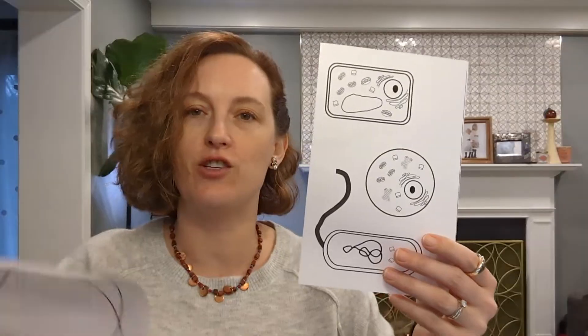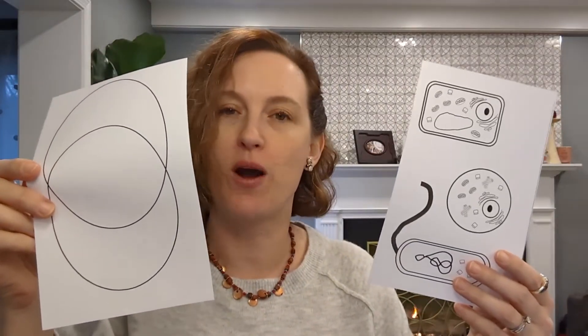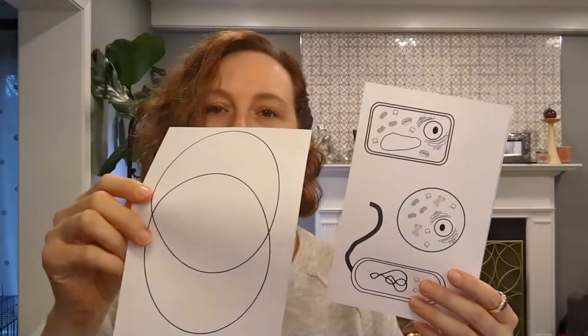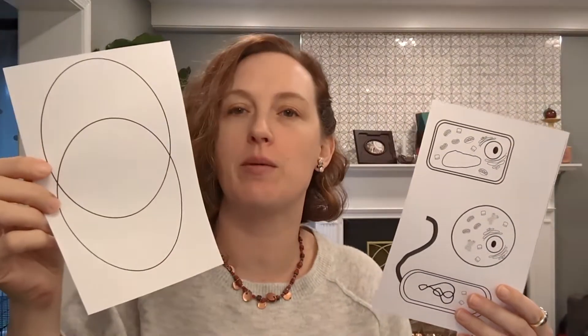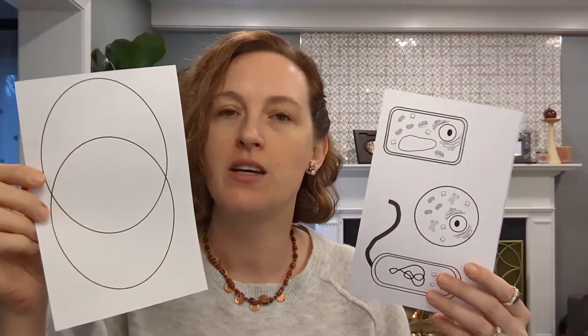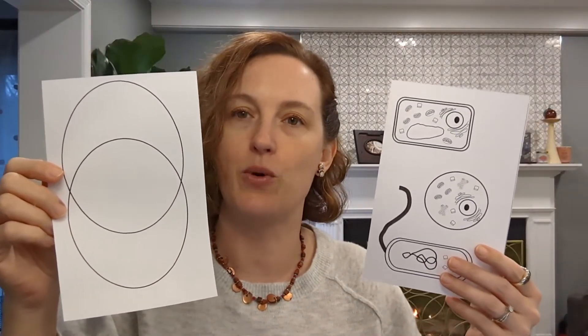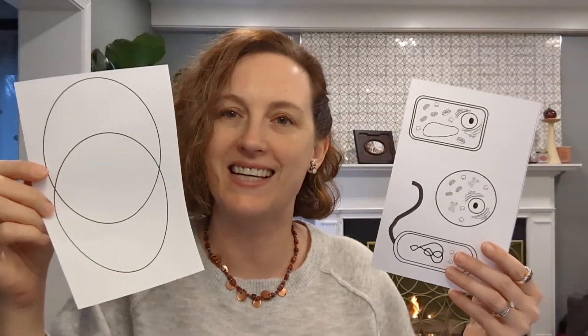Hello microbiologists! Today we are going to be contrasting prokaryotic and eukaryotic cells in a very graphic way. We're going to be coloring them and we're going to be making a Venn diagram to show what the similarities and differences are between the kinds of cells that make up living things.